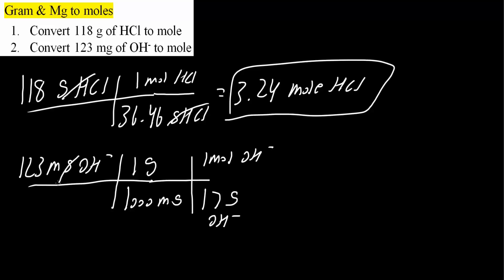Let's check our units. Milligrams cancel, grams cancel, and we have moles of OH-. So using a calculator we would get 0.00724 moles of OH-. And that's all we need to do for these two problems.